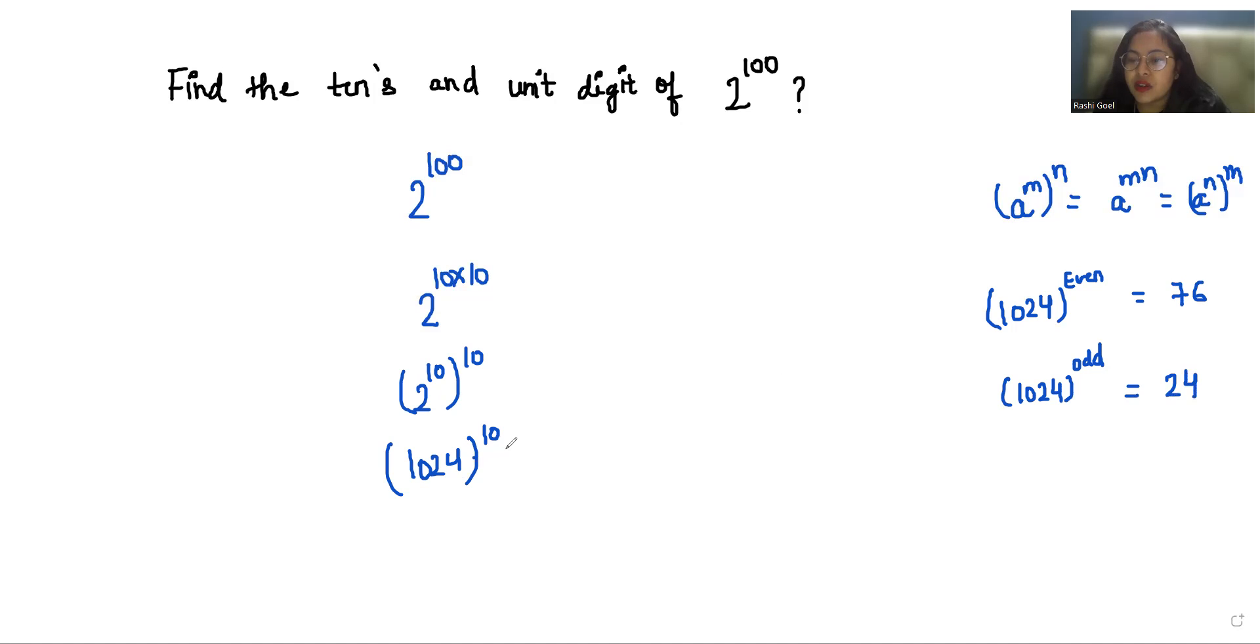So in this case, the power is even, so our last two digits is 76. And we have to find only the last two digits, tens and unit digits, so that is 76. And if the power is odd, the last two digits is 24.